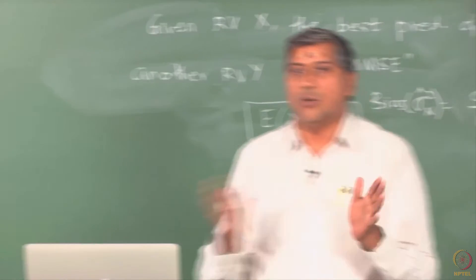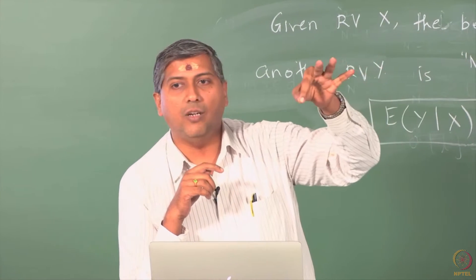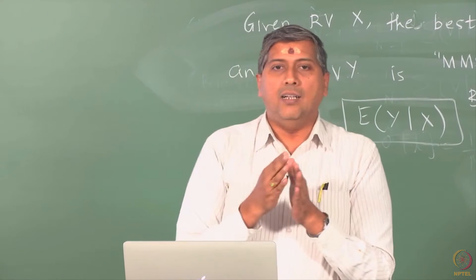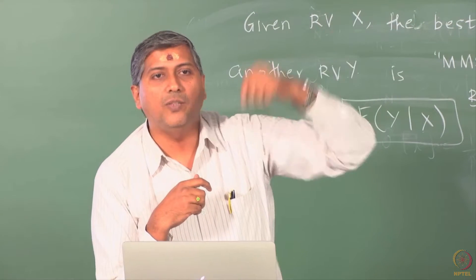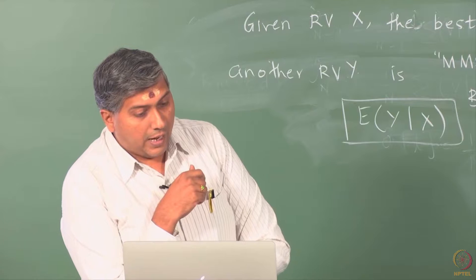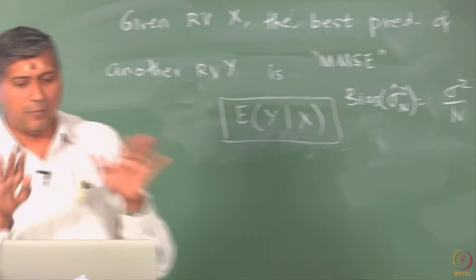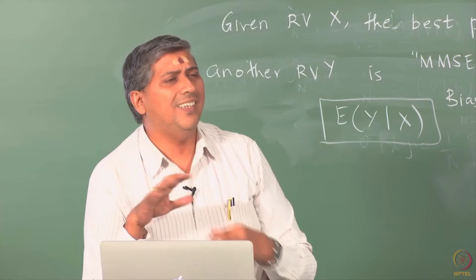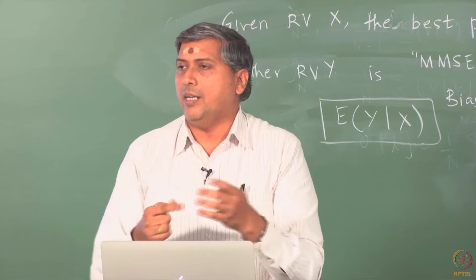A sequence of real numbers is a realization of a sequence of random variables if each element in that sequence is a realization of the corresponding random variable. There is also a notion of a sequence of random variables on a sample space ω. You have to imagine that there are many, many realizations corresponding to this sequence, depending on the data realization, which lives across some sample space.